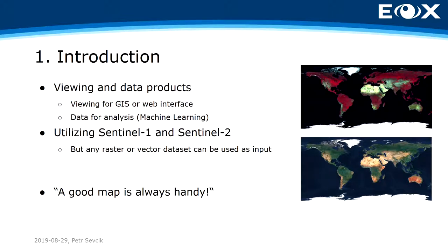We have two product types. The first is viewing products — basically GIS background layers. This is our best-selling product because most people just want to see the world in the best possible way, so we offer a GIS layer you can open in QGIS. It's a bit large but it's the whole world at 10-meter resolution. The second part is data — we store and generate any bands of the Sentinels, and it can even be non-Sentinel imagery. Data for analysis includes crop type classification, done with mosaics or data read directly from AWS or DIAS.